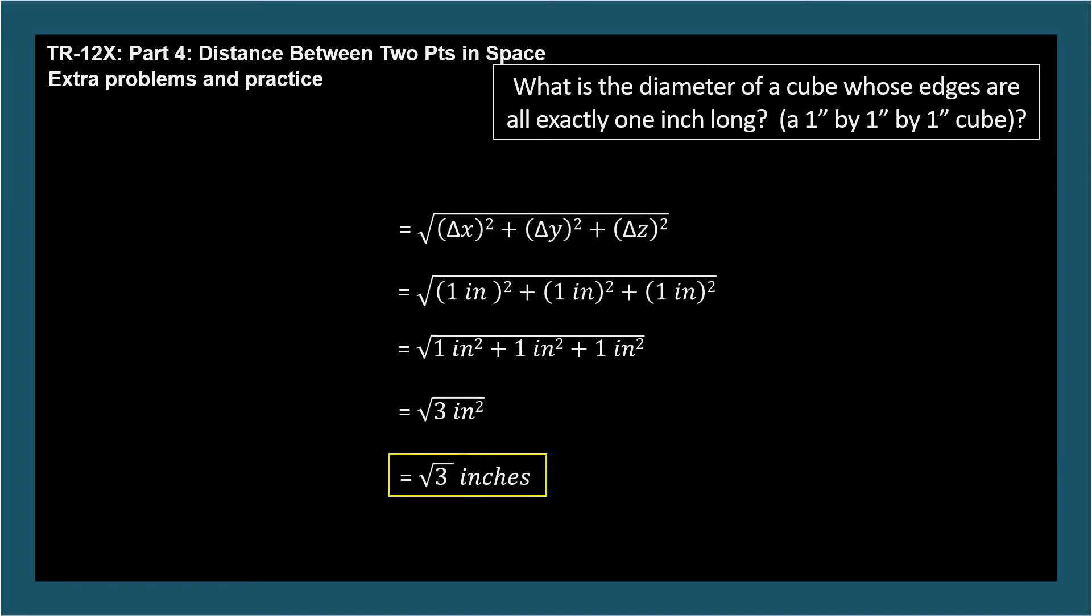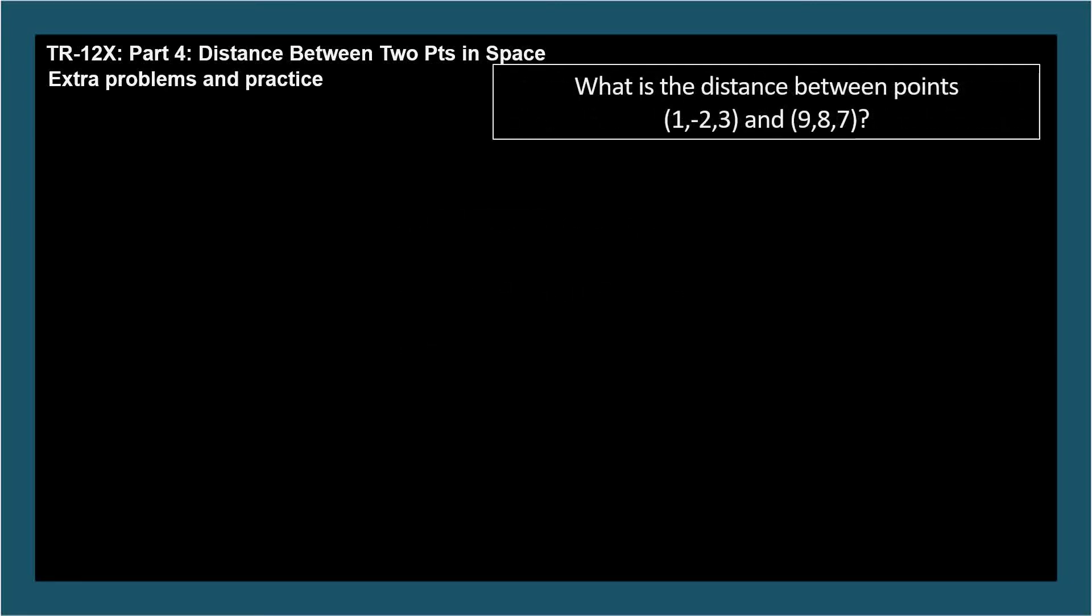So far, all of our examples for 3D distances have started at the origin. Let's do one more problem, but this time both points will be away from the origin.